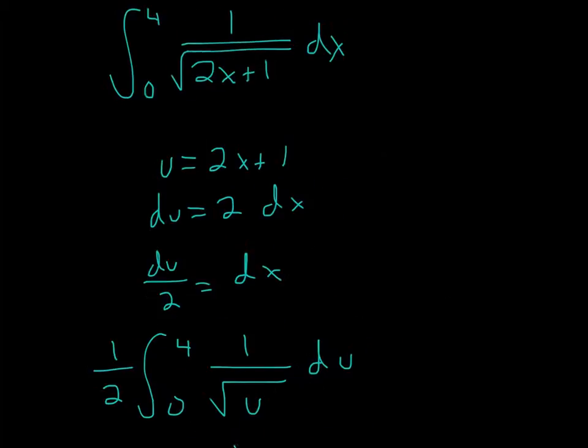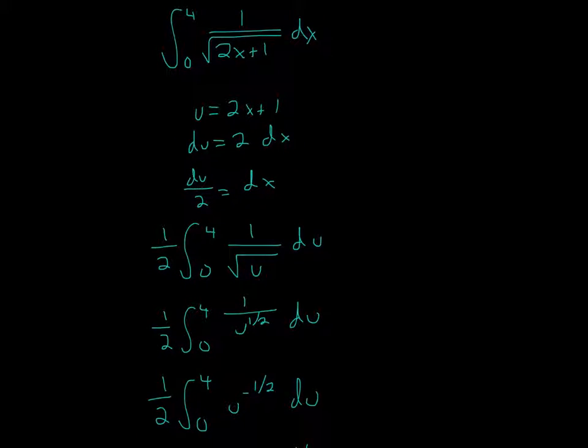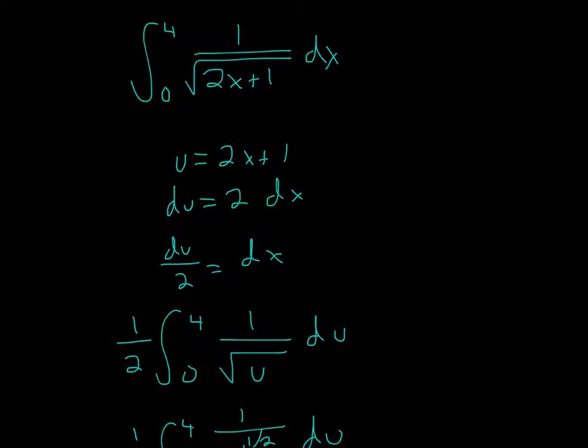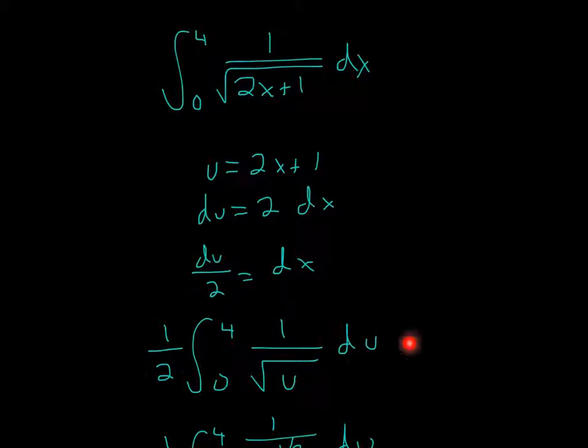Why we did that is because we want the new integral to look like the old one but simpler. We want to represent dx. dx equals du over 2. So all I'm going to do is have 1 half here, and then 1 half times du equals du divided by 2, which equals dx.